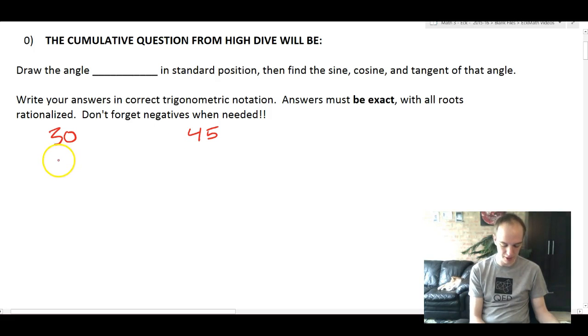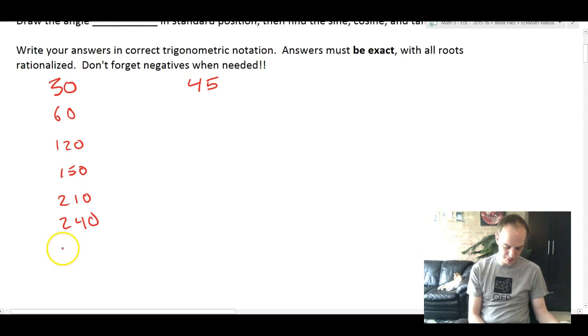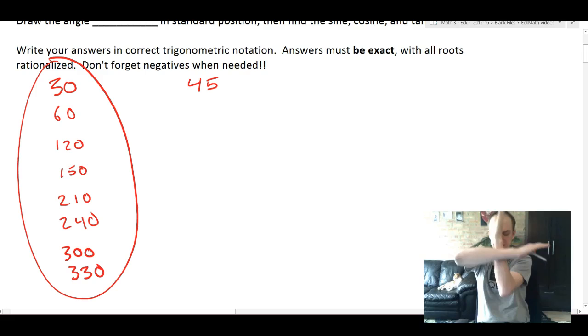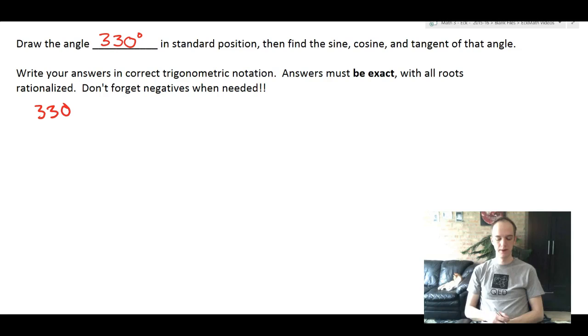Multiples of 30 are like 60, 120, 150, 210, 240, 300, and 330. Those are the only multiples of 30 we can choose. We're not going to ask you about the weird quadrant angles where it's straight up and down. For 45, we can choose 45, 135, 225, and 315. That's it. Of all those angles, today we're going to randomly draw 330 degrees in standard position.